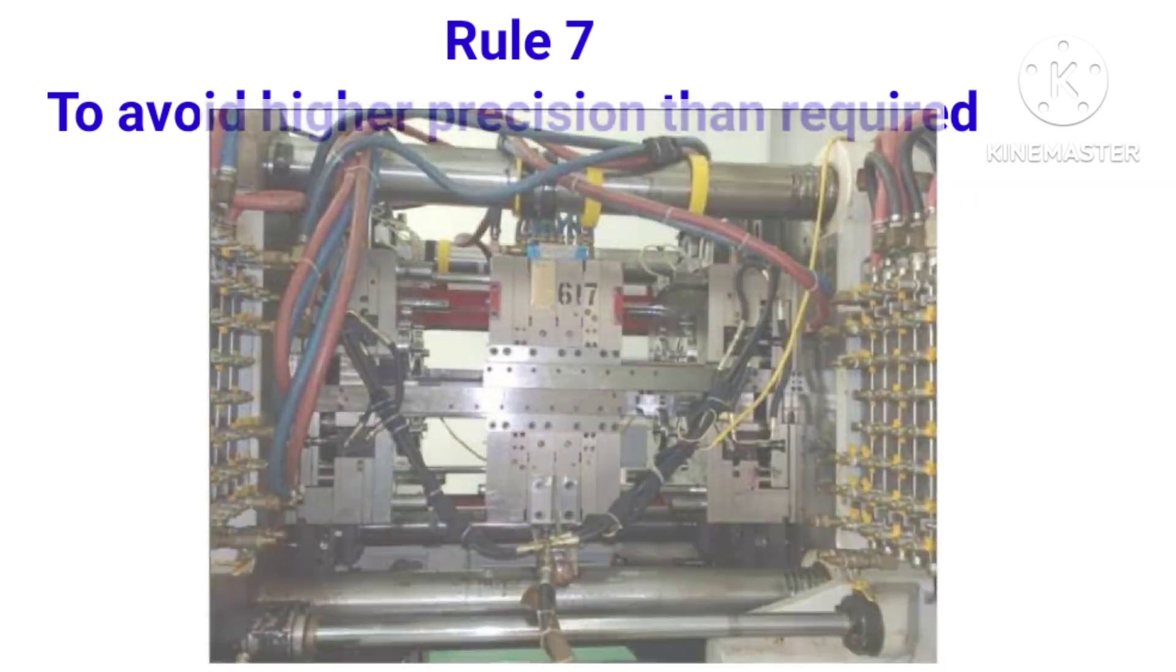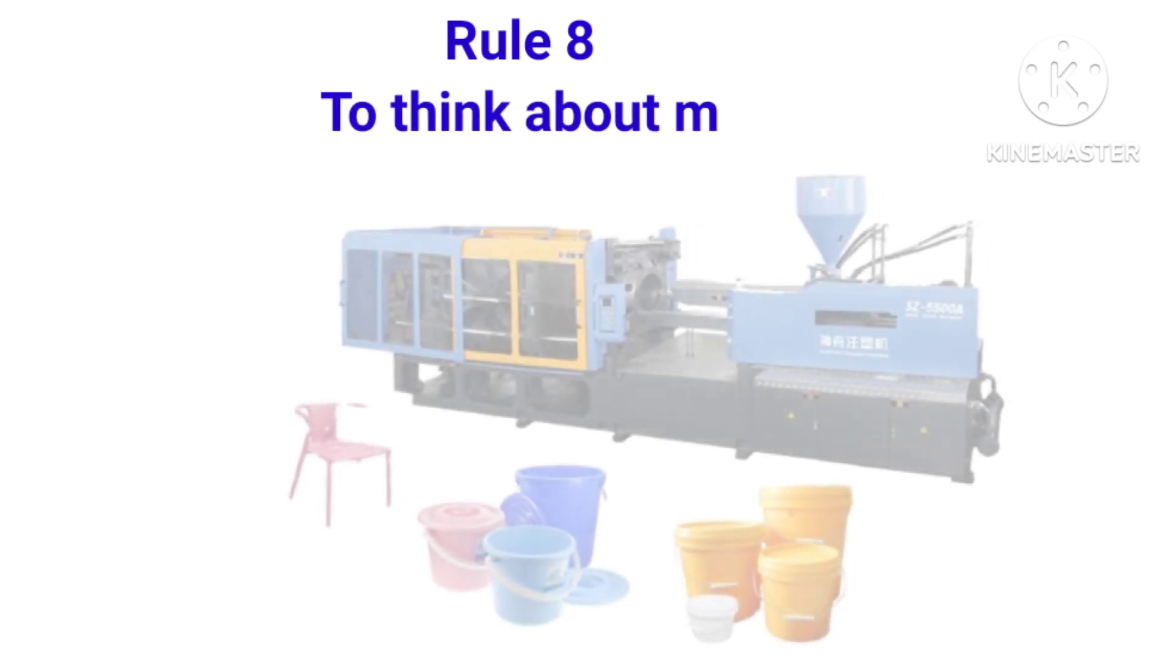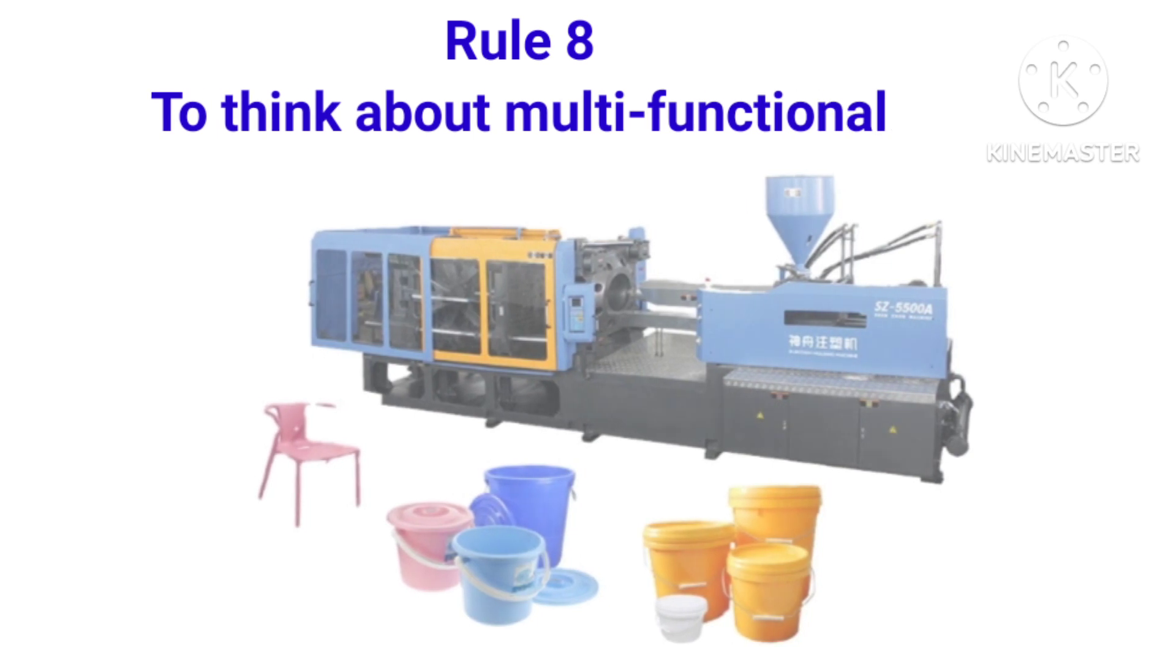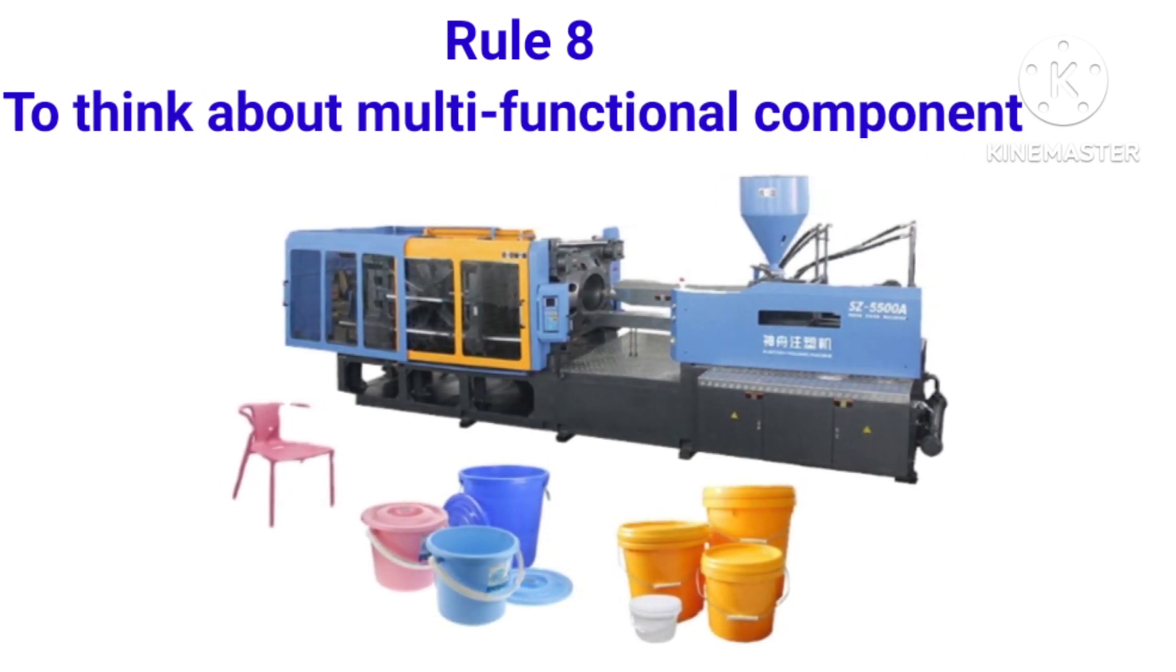Rule number eight is during designing plastic part, need to think about multifunctional components. If you are required two components differently, then we have to think that can we do that both two components in one tool. In this way we can reduce the tool cost. Rule number nine is wherever required, need to use economic assembly techniques.